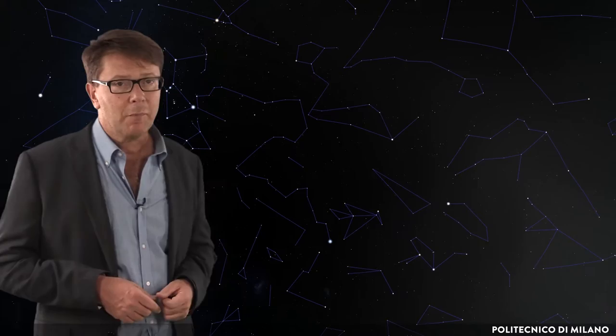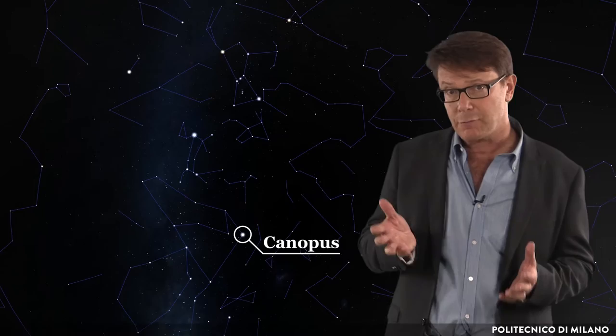The most brilliant stars, first magnitude stars, include Canopus and Rigil in the southern skies, and Arcturus, Vega and Capella in the northern ones.